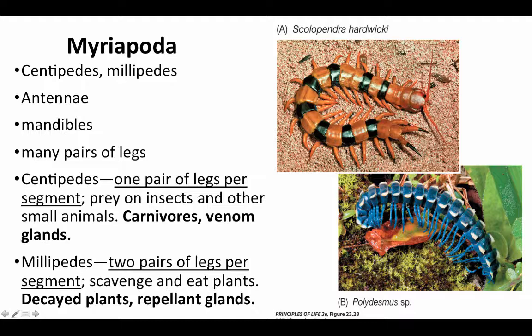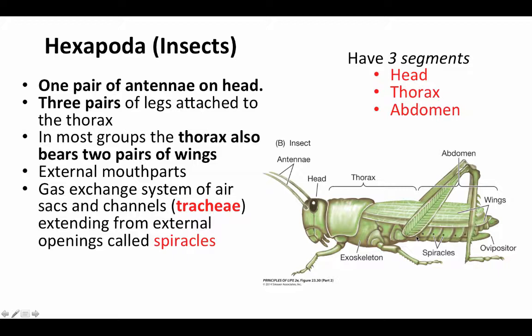In millipedes, their segments are actually two fused segments, so they appear to have two legs per segment. These are very important decomposers in ecosystems — they tend to feed on dead plant material and recycle nutrients back into the ecosystem. So millipedes can be another very important component to nutrient cycling.